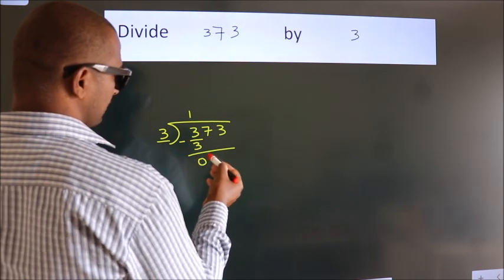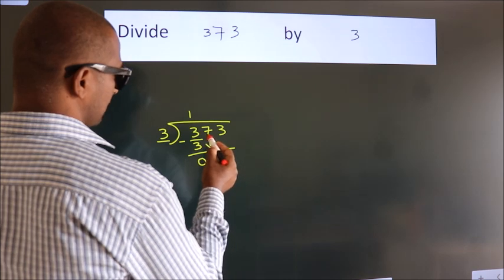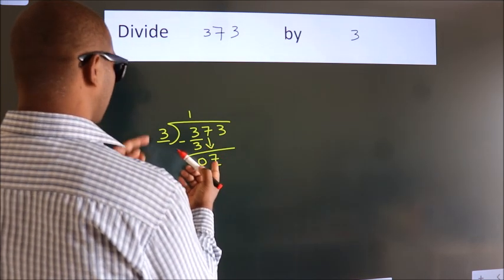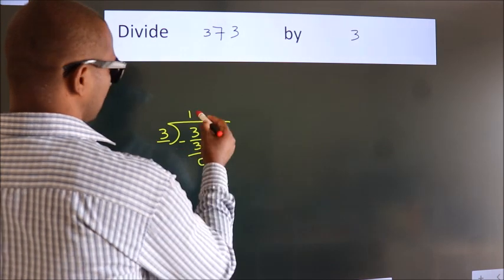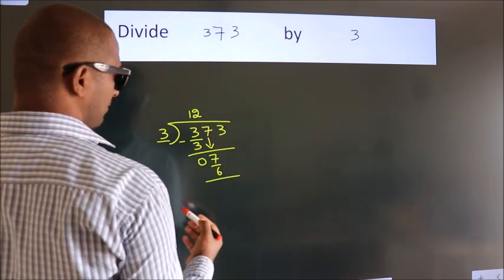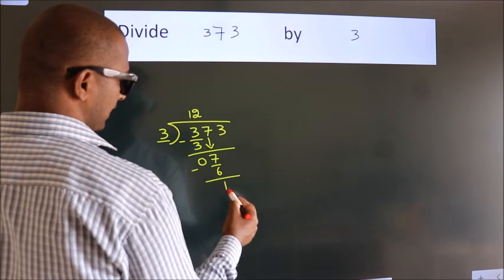After this, bring down the beside number, so 7 down, making 7. A number close to 7 in the 3 table is 3 times 2, which is 6. Now, we subtract and we get 1.